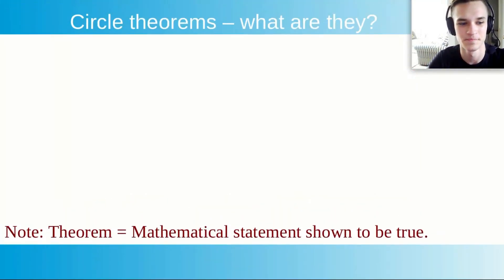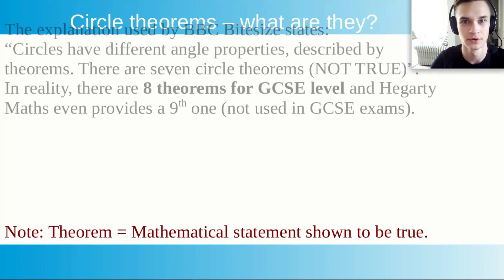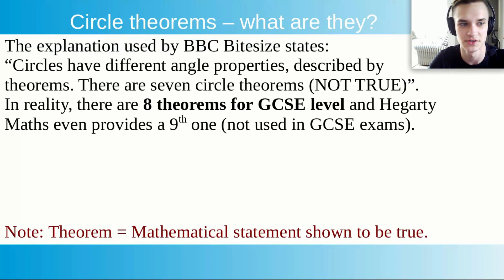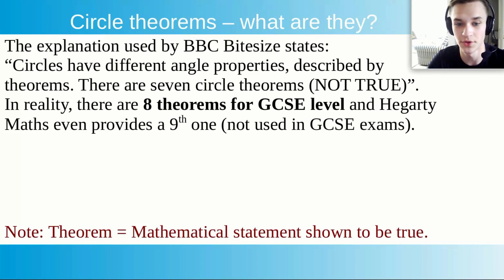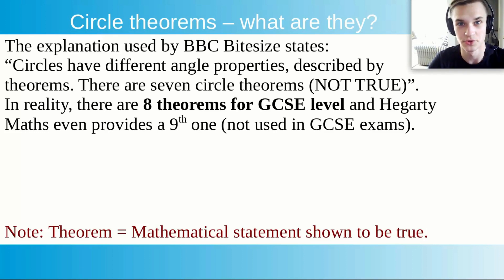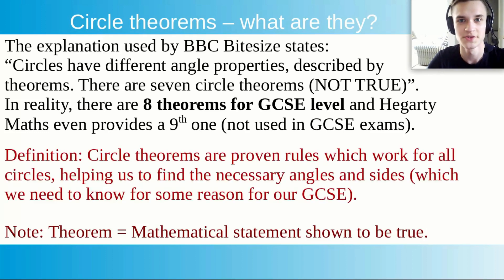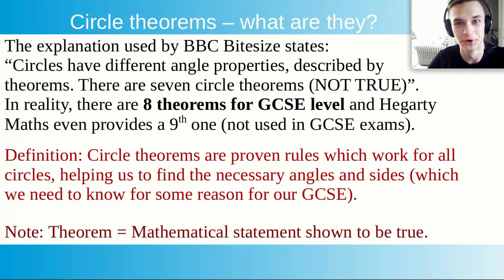So, Circle Theorems — what actually are they? The explanation used by BBC Bitesize states circles have different angle properties described by theorems. There are said to be seven circle theorems, which is not exactly true, because in reality there are eight theorems for GCSE level, and Hergity Maths even provides a ninth one. The actual definition: Circle Theorems are proven rules which work for all circles, helping us find the necessary angles and sides we need to know for our GCSE.